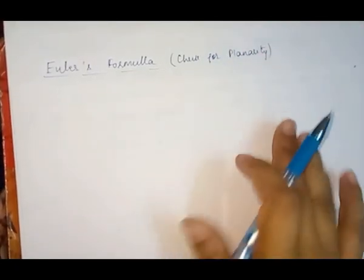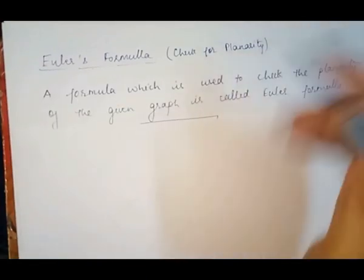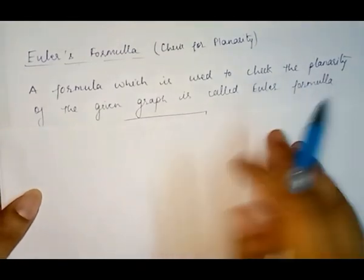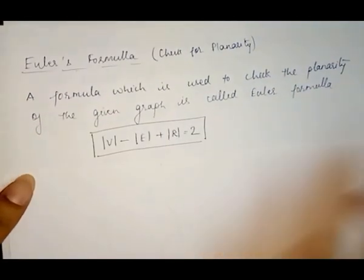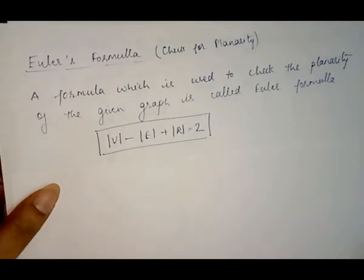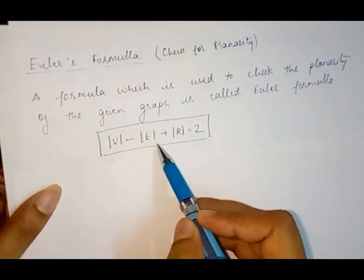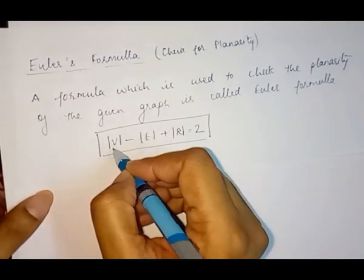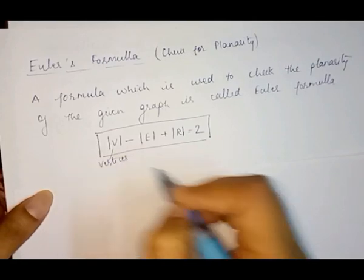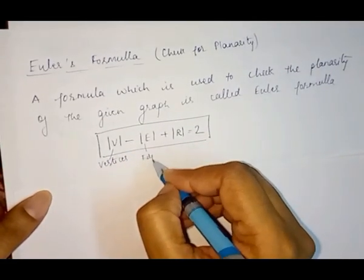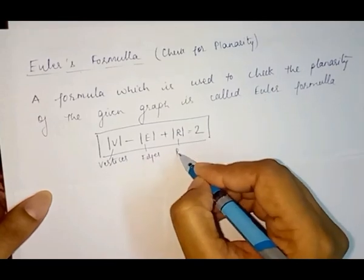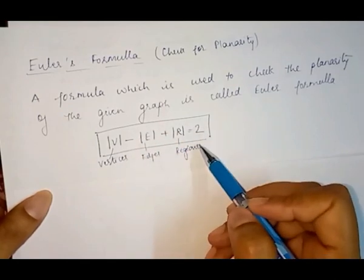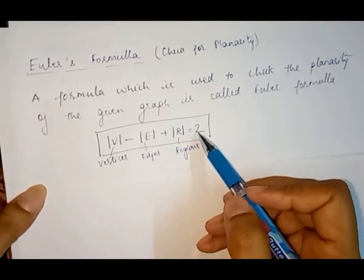A formula which is used to check the planarity of a given graph is called Euler's formula. According to Euler's formula, the formula is |V| - |E| + |R| = 2, where V means number of vertices in a graph, E represents the number of edges in a graph, and R represents the number of regions in a graph. If this equality holds for a particular graph, then that graph is called a planar graph.